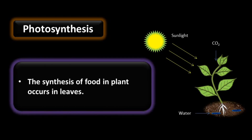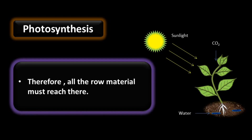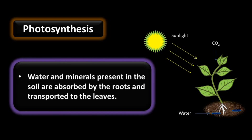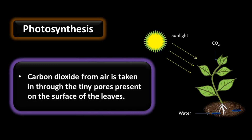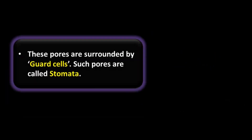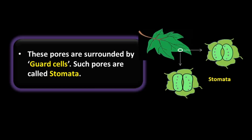The synthesis of food in plants occurs in leaves, so all the raw materials must reach there — leaves are the site of photosynthesis. Water and minerals present in the soil are absorbed by roots and transported to the leaves. Carbon dioxide from air is taken in through tiny pores on the surface of the leaves. These pores are surrounded by guard cells and are called stomata.